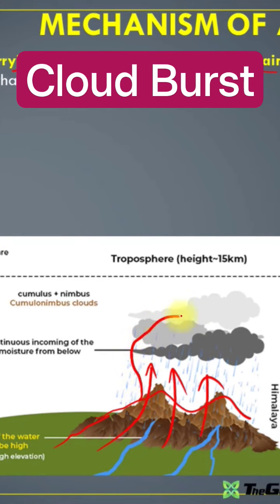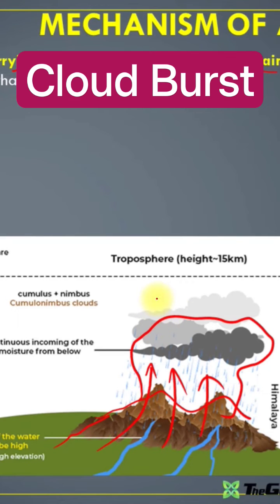These vertical columns of clouds are called cumulonimbus clouds. If you haven't watched the video on cloud classification, it's in the playlist under climatology — you can watch the video on cloud formation and the family of clouds there. Cumulonimbus clouds are also called thunderstorm clouds or cyclonic clouds, and they are responsible for cloudbursts.